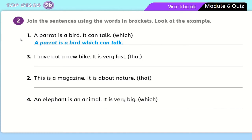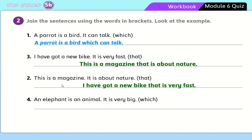Try it. I have got a new bike that is very fast — remove 'it' and the full stop, then use 'that'. I have got a new bike that is very fast. Number two: this is a magazine that is about nature — it's now joined. Number four — the last one: an elephant is an animal. It is very big. Use 'which'. Take your time and try to do it by yourselves.